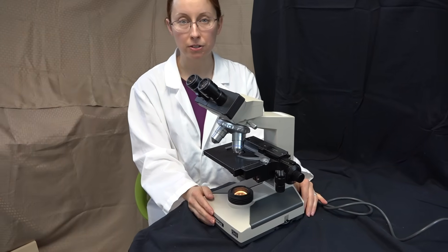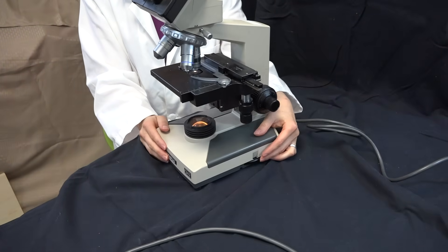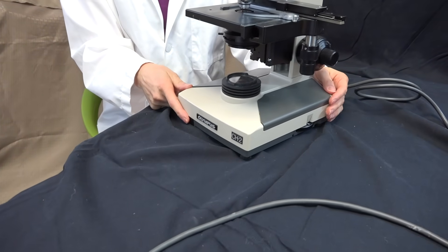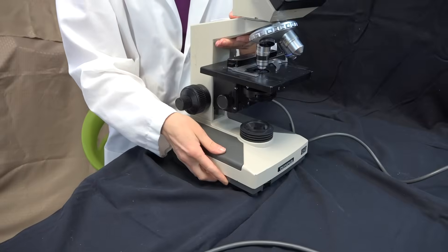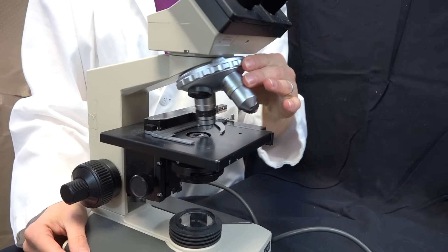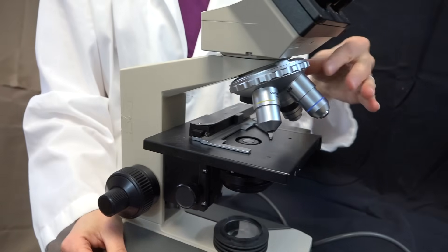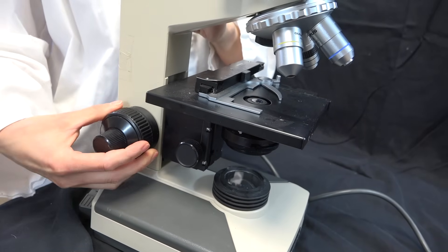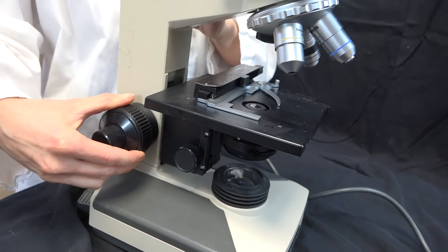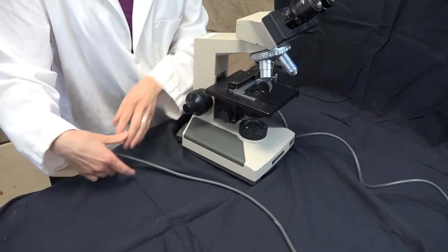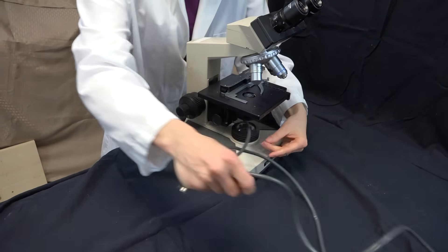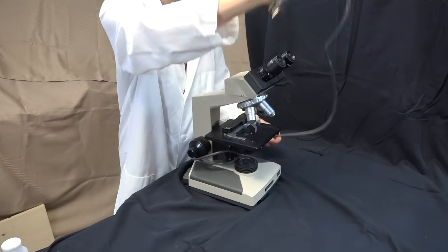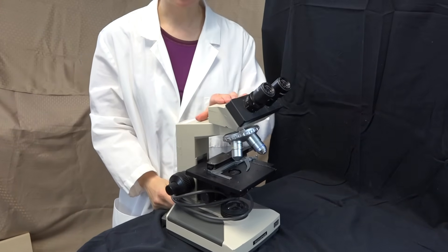To put the microscope away, begin by turning the light all the way down and then turn off the power. Then rotate the nose piece so that the low power objective is above the stage and lower the stage completely. Finally, wrap the power cord around the base of the microscope and around the arm. If your microscope has a dust cover, put that on.